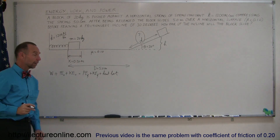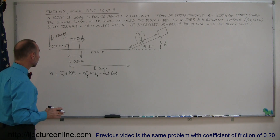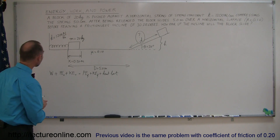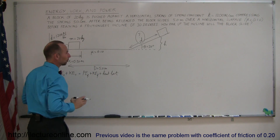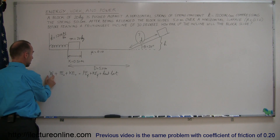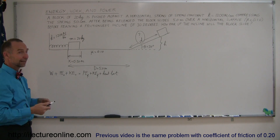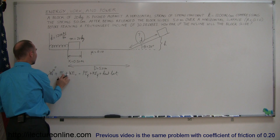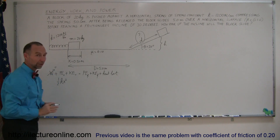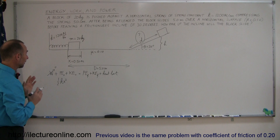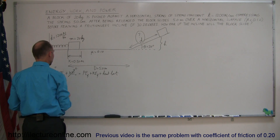Just like many other problems involving energy and work, this is a really good equation to use. Now we're going to identify which terms we have values for. We're pushing a block against the spring, so either we account for that energy as work done or as energy stored in the spring. I elect to say that after the block is pushed against the spring, we have a potential energy of one-half kx squared — that's the energy stored in the spring. At the moment it releases the block, there's no motion, so there's no initial kinetic energy.